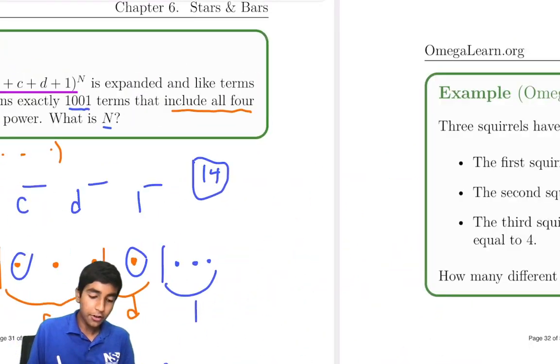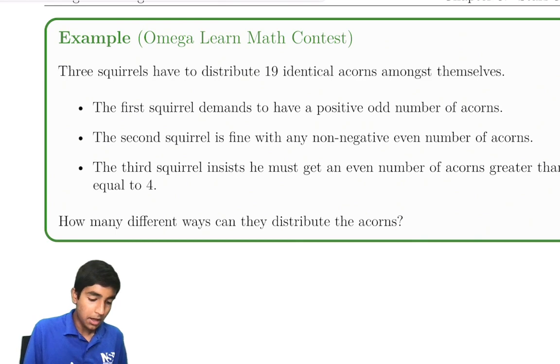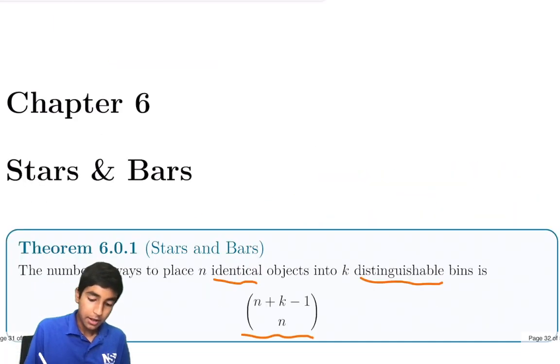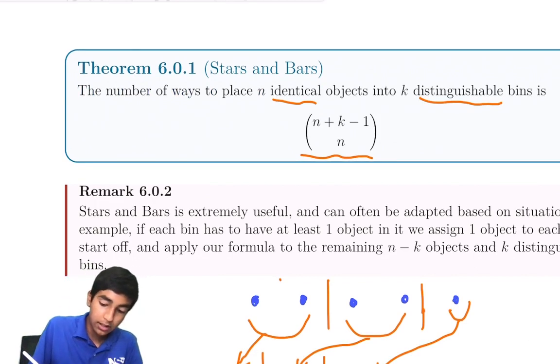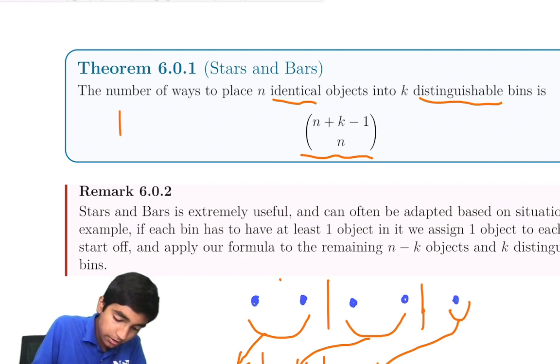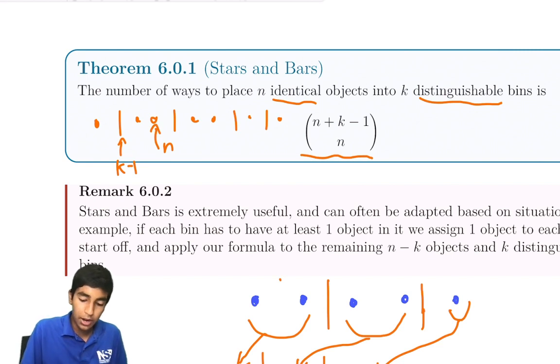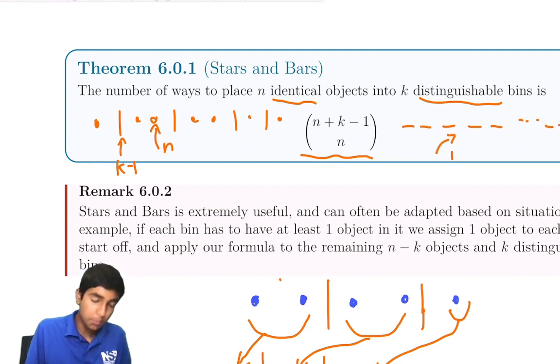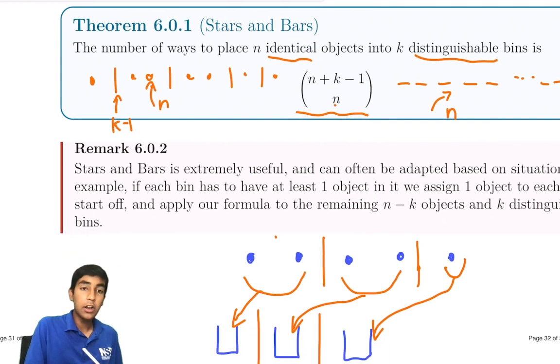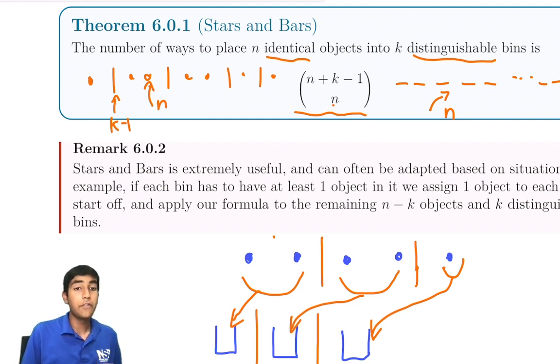Okay, so here's another clever application of stars and bars, but first let's quickly review the formula. Essentially, what this means is that we have n identical objects in k bins, so we have k minus 1 bars. And n of these objects, so in total there's n plus k minus 1 spots, and of them we must choose n to be the objects. So (n+k-1) choose n is how we get the formula. You should know how it works because there's some conditions that we have to use.